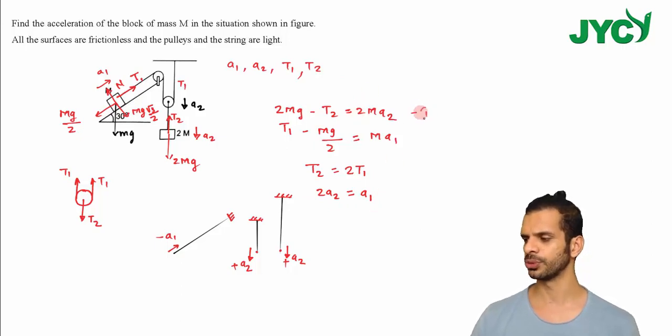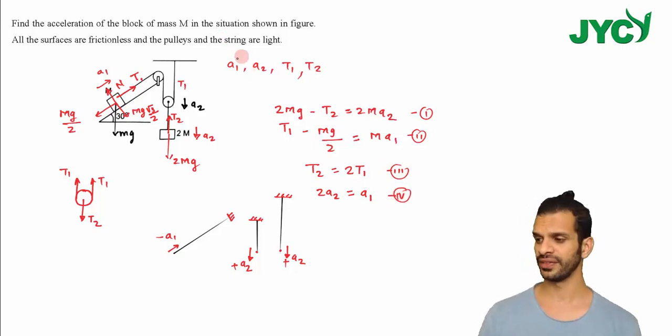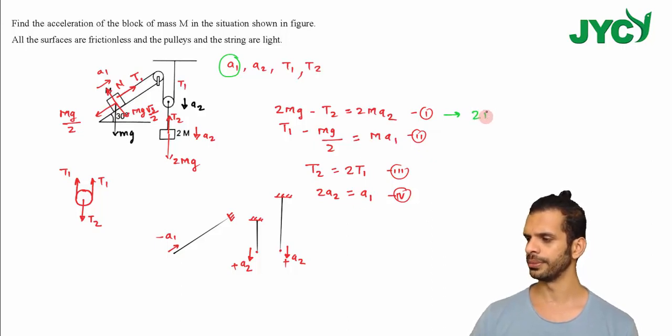So here are my 4 equations. Now I will solve these equations to get the value of the acceleration. I'll substitute A2 as A1 by 2, so the first equation becomes 2MG minus T2 equals MA1. This is the fifth equation.